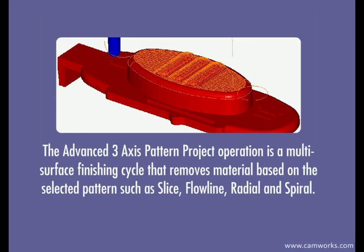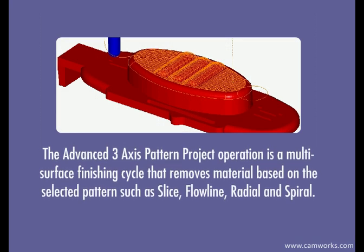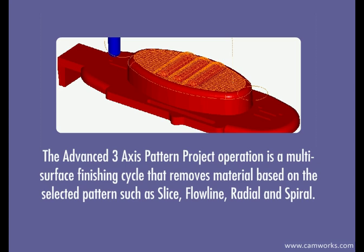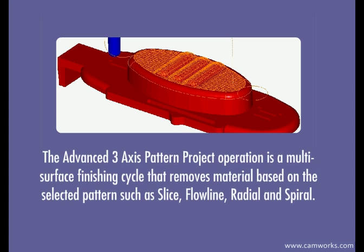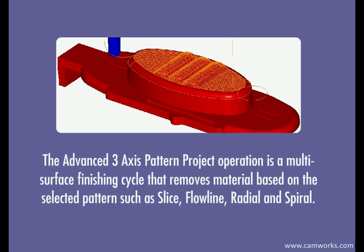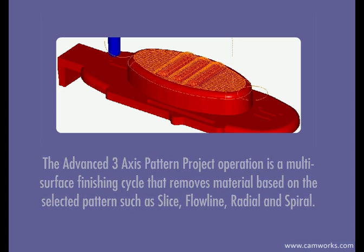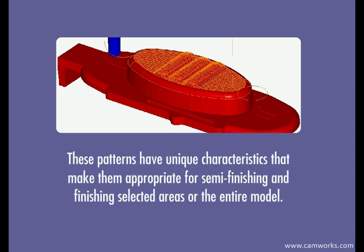The advanced three-axis pattern project operation is a multi-surface finishing cycle that removes material based on selected patterns such as slice, flowline, radial, and spiral. These patterns have unique characteristics that make them appropriate for semi-finishing and finishing selected areas or the entire model.